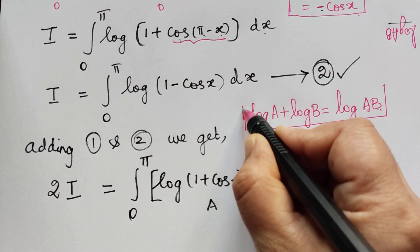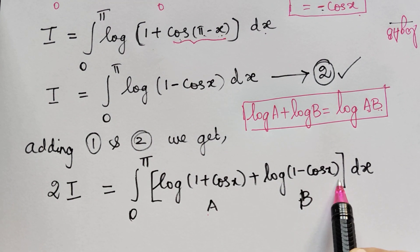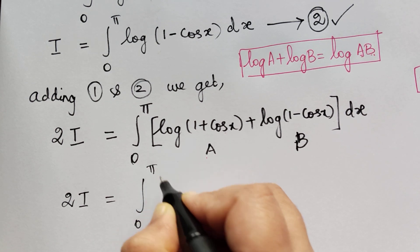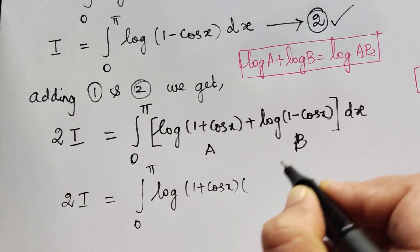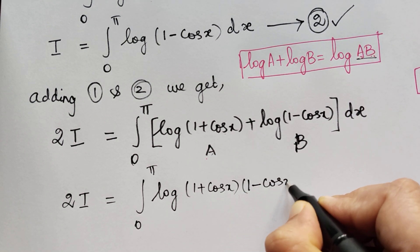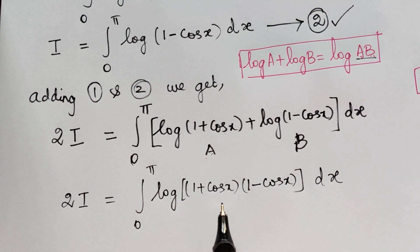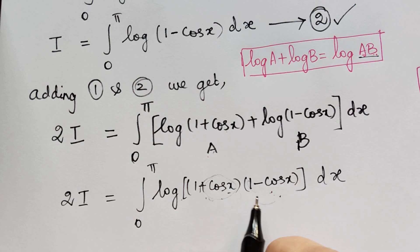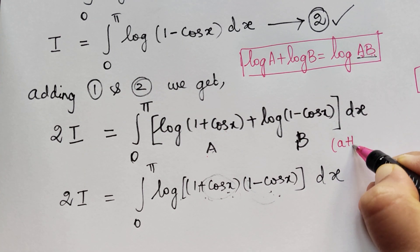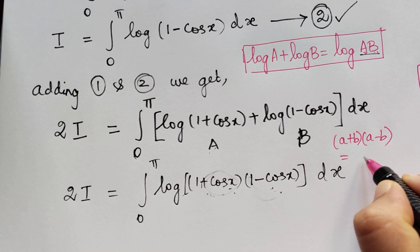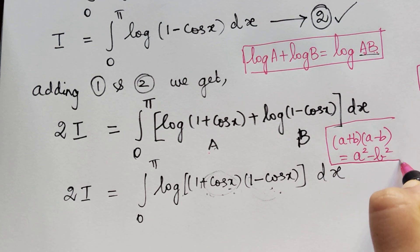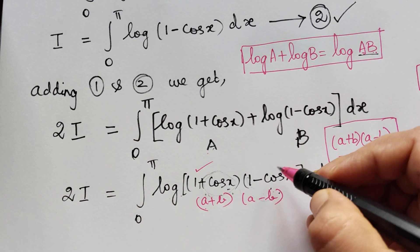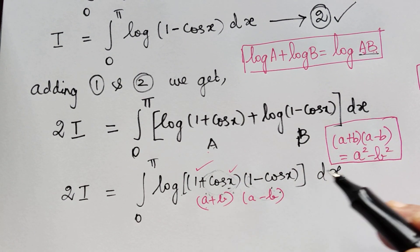Applying the log property where a is (1 + cos x) and b is (1 minus cos x), we write 2I equal to the integral from 0 to pi of logarithm of [(1 + cos x)(1 minus cos x)] dx. Now (1 + cos x)(1 minus cos x) is in the form (a + b)(a minus b), so we apply the algebraic identity (a + b)(a minus b) equals a squared minus b squared, where a is 1 and b is cos x, giving 1 squared minus cos squared x.